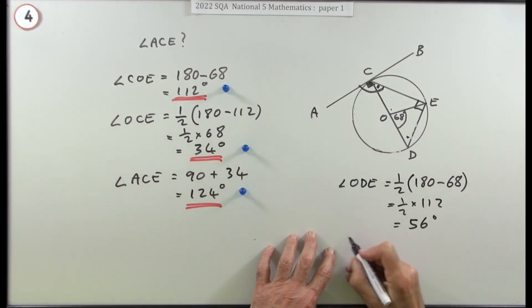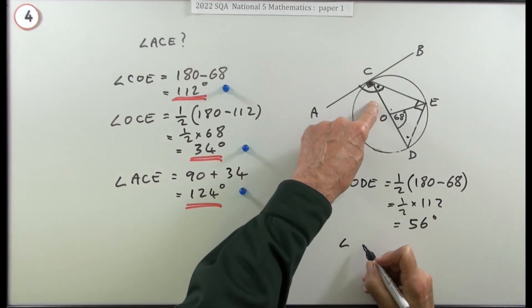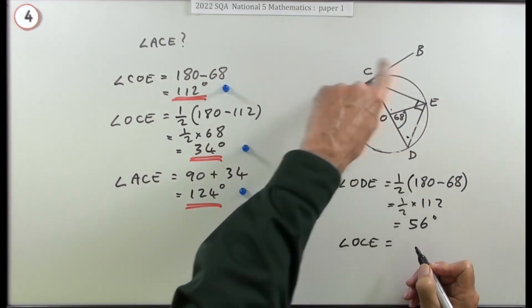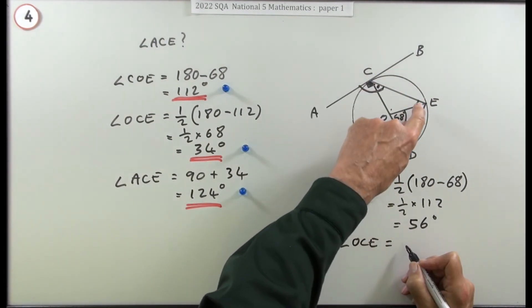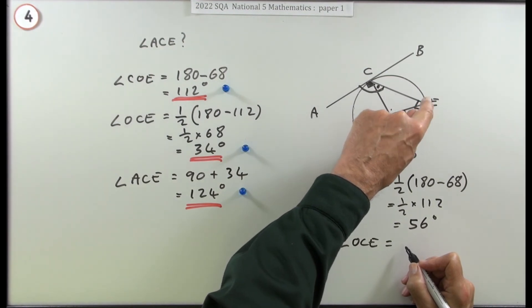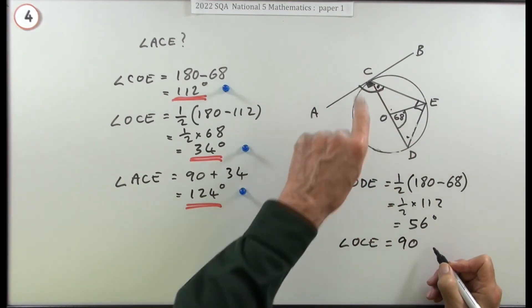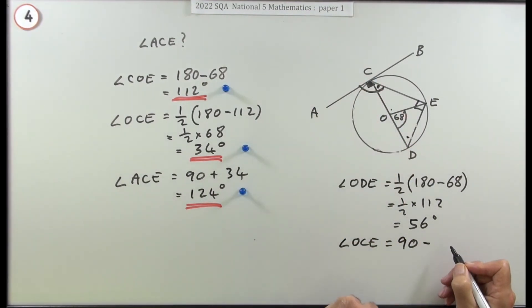And then you could have got to this one that you wanted, this OCE, by saying well you've got a right angle triangle, and if you've got a right angle triangle you've used up 90 already. The quick way to do that would just be to say the remaining two must make up a right angle - they're complementary - will be 90 minus the 56, which is 34 degrees. And then you're back to this again.